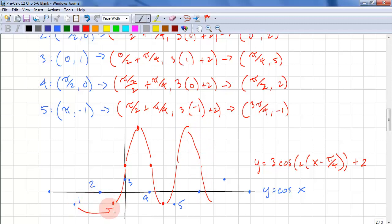Point 1 goes here. Point 2 translates to there. Point 3 transforms to there. Point 4 transforms to there. And point 5 transforms to there. Draw as many cycles as you need.